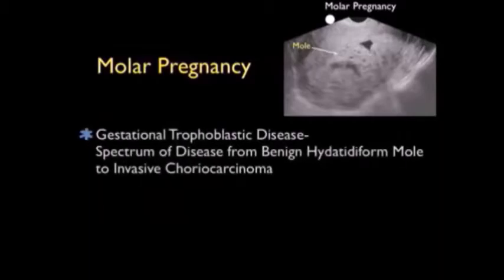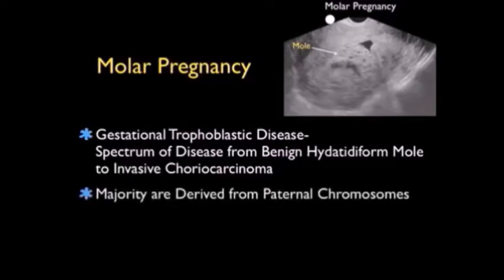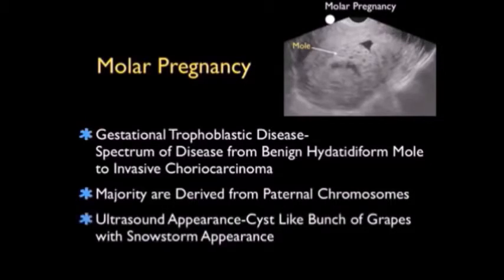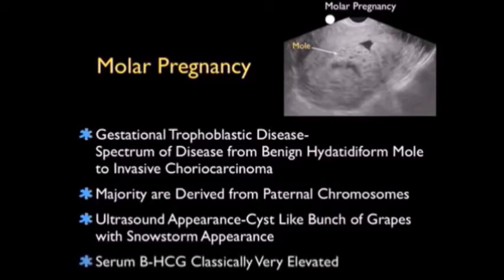I'd like to conclude this module with another form of abnormal pregnancy: a molar pregnancy, which is a form of gestational trophoblastic disease. Gestational trophoblastic disease ranges from a spectrum from a benign hydatidiform mole to invasive choriocarcinoma, a form of metastatic disease. The majority of these are derived from paternal chromosomes — there are no maternal chromosomes in the embryo. The ultrasound appearance will be a cyst-like bunch of grapes with a snowstorm-type appearance, and classically the serum beta-HCG will be very elevated.